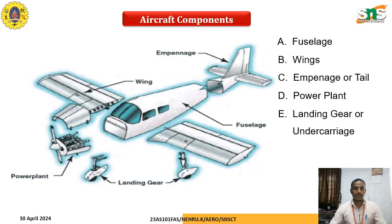The aircraft components include fuselage, wings, empennage or the tail section, power plant, and landing gear or undercarriage. Here we have the low-wing type which is attached to the fuselage, and here we have the propeller-type power plant. This is a non-retractable landing gear which moves with the airplane.